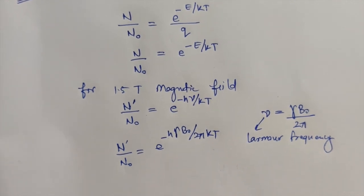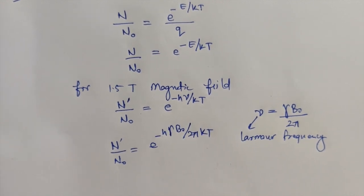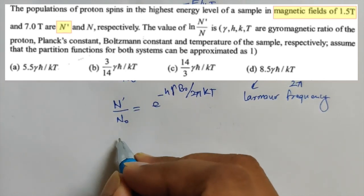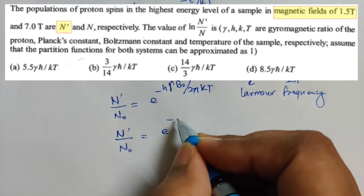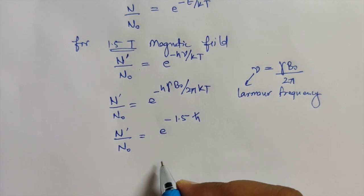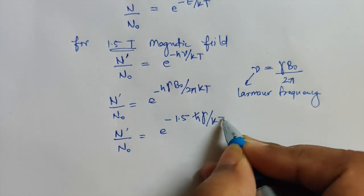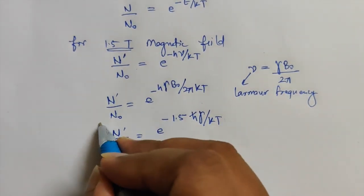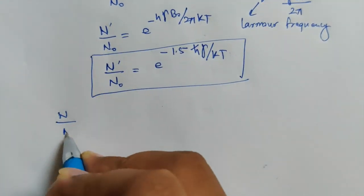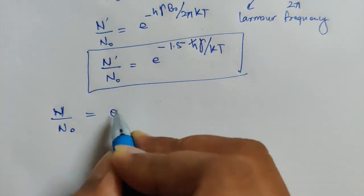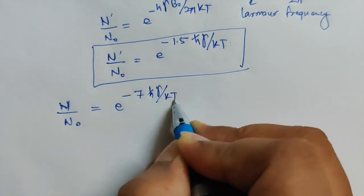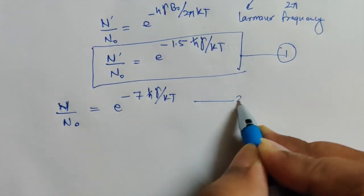Similarly for the second condition where the magnetic field is 7 tesla, and the population is N: N / N-naught = e^(−7ℏγ / KT). This is equation 2. Now let's divide equation 1 by equation 2. On the left side we get (N-dash / N-naught) divided by (N / N-naught), and on the right side we get e^(−1.5ℏγ / KT) divided by e^(−7ℏγ / KT).